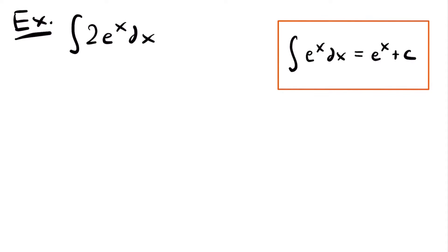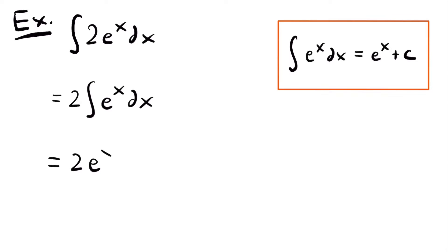For our first example, we have the integral of 2 times e to the power of x dx. Using our rule that the integral of e to the x dx equals e to the x plus c, I'll start by pulling the constant of 2 to the outside. So we have 2 times the integral of e to the power of x dx, which equals 2 times e to the power of x plus c. This is the antiderivative, or the answer to our integral.